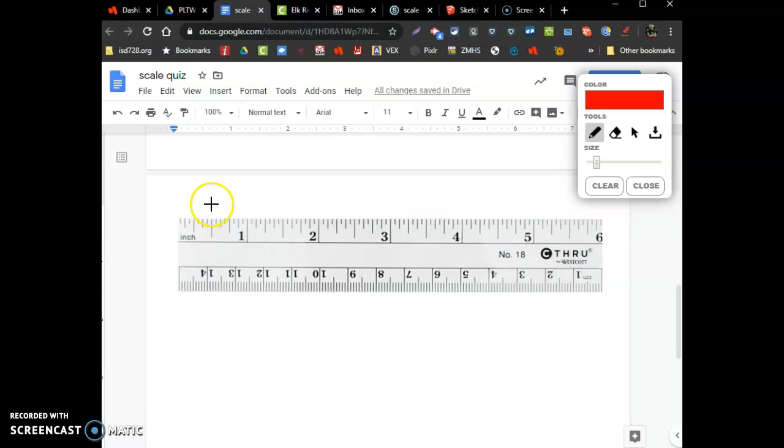So remember, it says count in quarter scale. That means every quarter of an inch is a foot. So here it would be one foot, two foot, three foot, four foot, right? Quarter is a foot. And if here is one full foot, this would be the midpoint, right? So there is six inches, 12 inches, six inches, 12 inches, six inches, 12 inches for those.